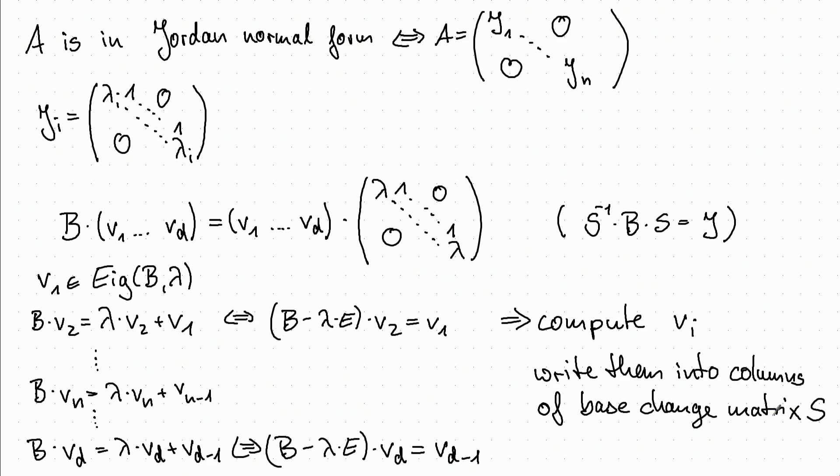And then we get that S to the minus 1 times B times S is our Jordan block.